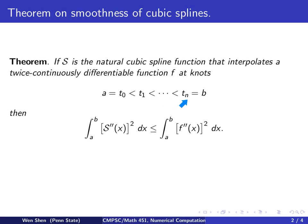which interpolates f at the knots, t0, t1, all the way to tn, lying on the interval from a to b.